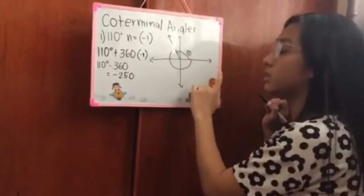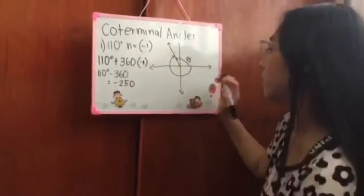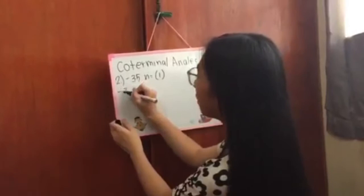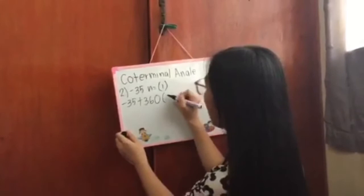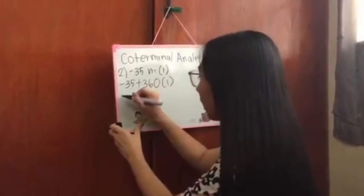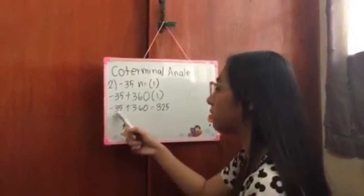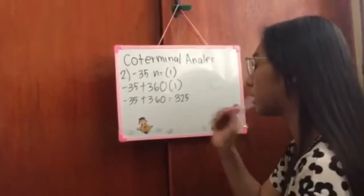The given is negative 35 and the n is positive 1. So negative 35 plus 360 times 1. The answer is negative 35 plus 360 equals 325. Why 325? Because the given is negative 35, so you subtract it from 360 and it becomes 325. Why positive? Because 360 is higher than negative 35.